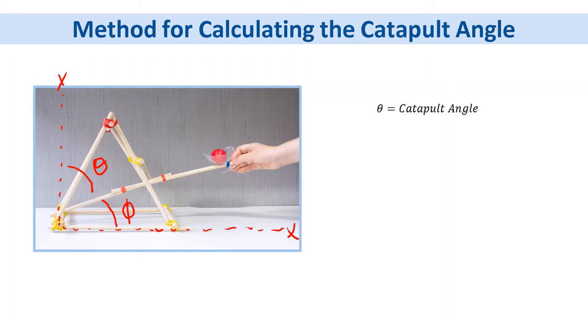And you can figure out what the dimensions of phi are by figuring out what the distance is from the base to the edge of your catapult. We're going to call this x.